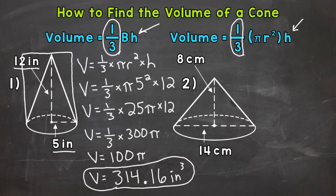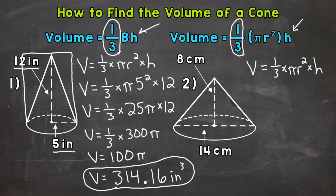Let's move on to number 2, where we have a cone with a given diameter for the base of 14 centimeters. We don't want the diameter though — we want the radius. And remember, the radius is half the diameter. So our radius will be 7 centimeters, and then our height is 8 centimeters. The first thing we do: write out our formula. So volume equals 1/3 times π r squared times the height. Once we have that, we plug in. So volume equals 1/3 times π, and our radius is 7 — because we're given the diameter and need half of that — so 7 squared times the height of 8.